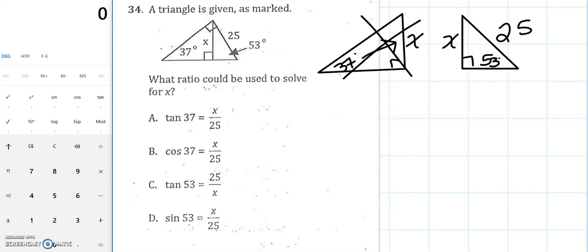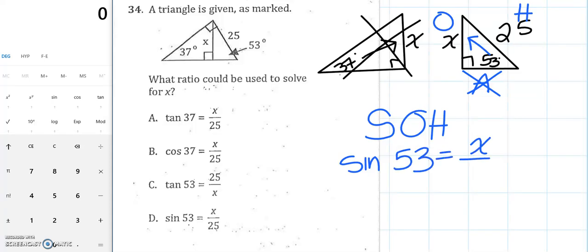Now if I take a look at what I have, I'm looking for x which is the opposite. The adjacent is missing. I don't have anything for the adjacent, so I'm going to cross that out. And 25 is my hypotenuse. So if I have O and H, that means I should be using sine, SOH-CAH-TOA, sine. So I should write down sine of my angle, which is 53, should equal the opposite x over my hypotenuse of 25. Okay, so I should look for that as an answer, and it's going to be choice D.